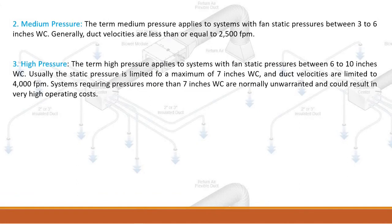Medium pressure applies to systems with fan static pressures between three to six inches WC, with duct velocities less than or equal to 2500 FPM. High pressure applies to systems with fan static pressures between six to ten inches WC. Usually the static pressure is limited to a maximum of seven inches WC, and duct velocities are limited to 4000 FPM. Systems requiring pressures more than seven inches WC are normally unwarranted and could result in very high operating costs.